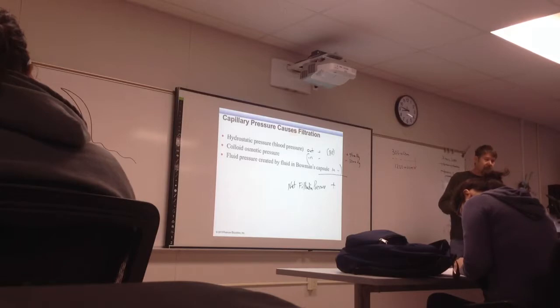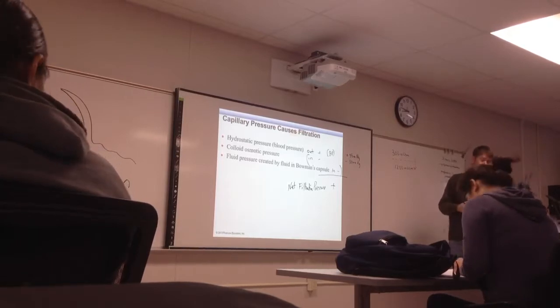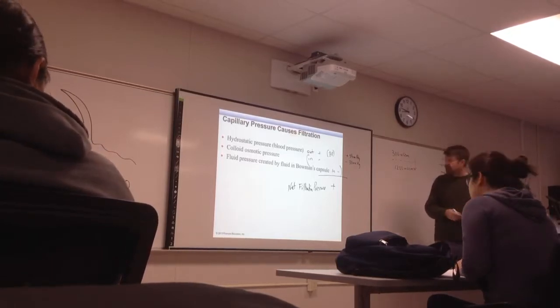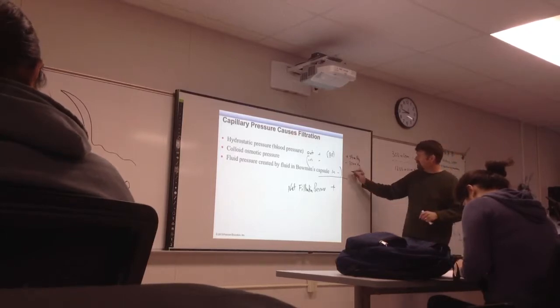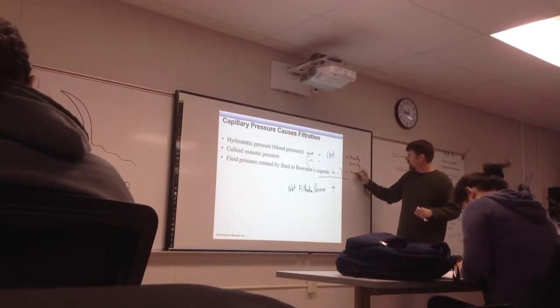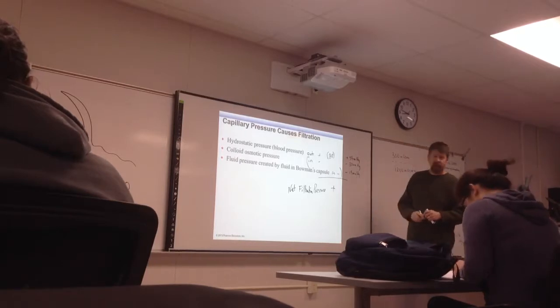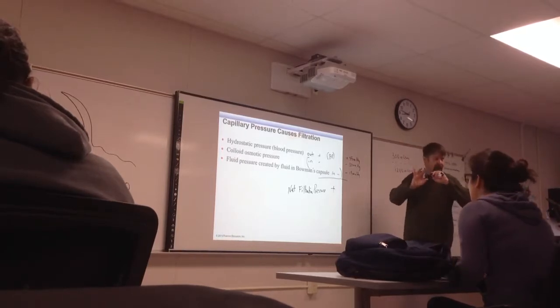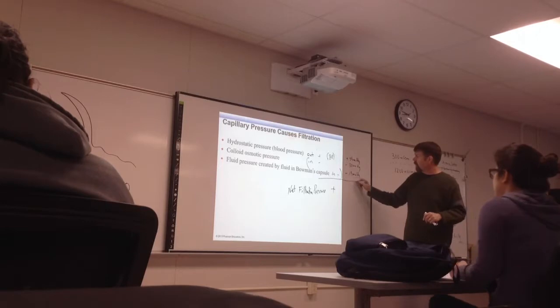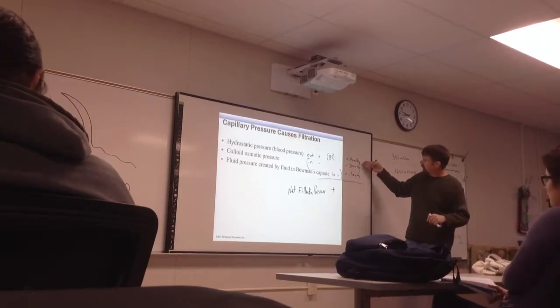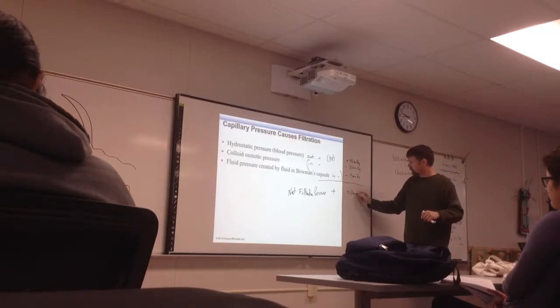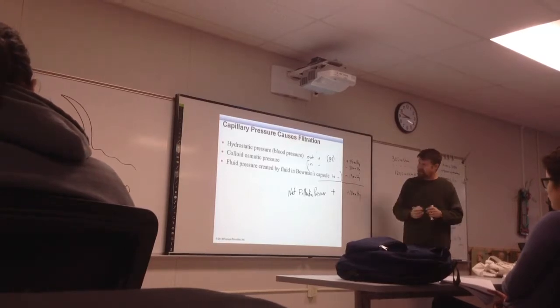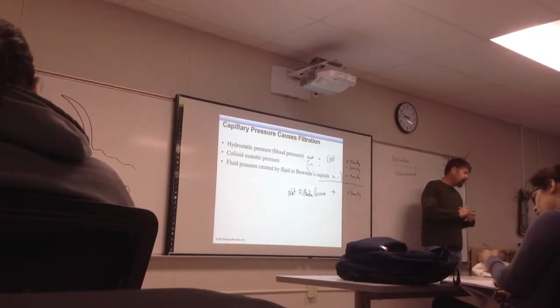And the capsular pressure, I think, tends to generally be about 15 millimeters of mercury there, if we're at homeostasis. So that when we resolve these, 55 minus 30 minus 15 gives us a net filtration pressure of about 10 millimeters of mercury.